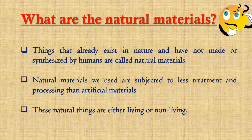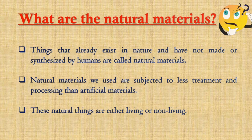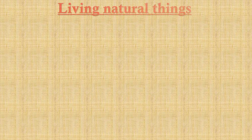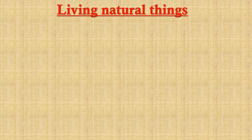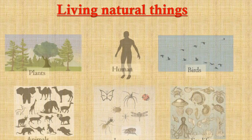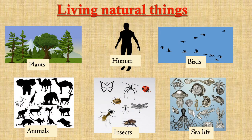These natural things are either living or non-living. These are examples of living natural things. This mainly includes all types of plants, humans, birds, animals, insects, and sea life.